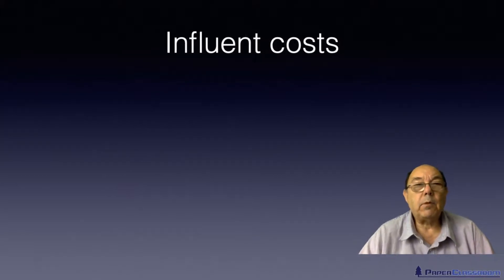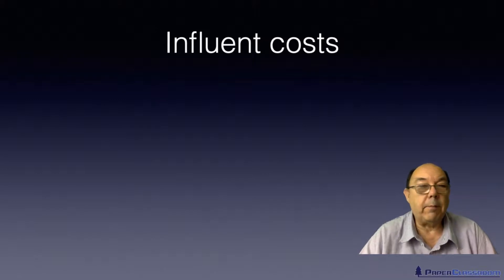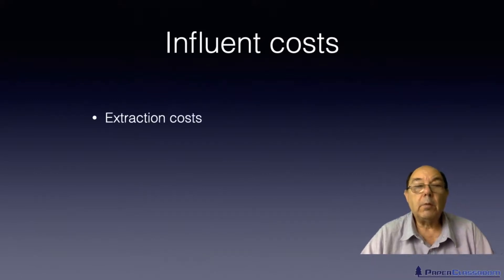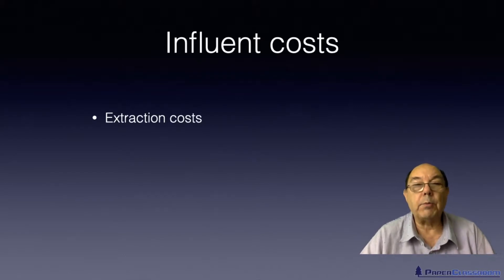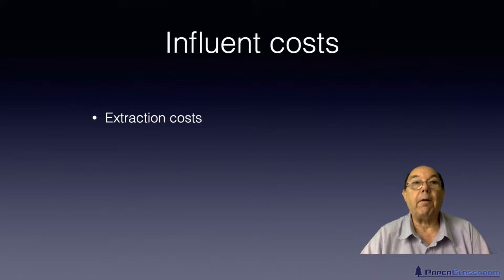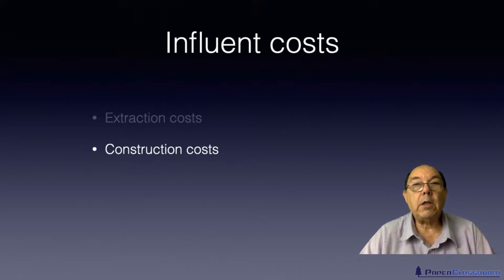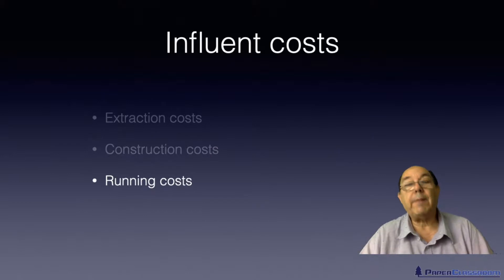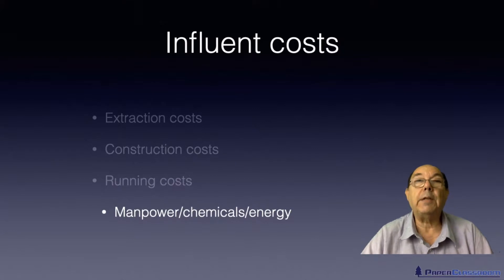Why would they like to have that? Well, if you think about the sort of cost structure: if you're bringing water in, you may bring it in from a borehole or a river, but sometimes you have to pay extraction costs — you have to pay a local authority or a water board money to take water out. Once you've taken it, it's not going to be good enough to use in the paper making system, so you'll need a water treatment plant. You've got the capital cost of that plant, and then the running costs — manpower, chemicals, and energy. So bringing raw water in has a cost.